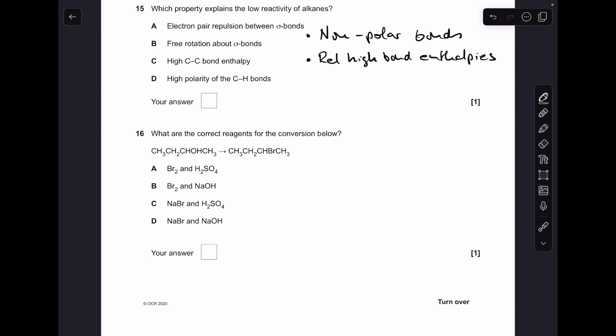Number fifteen: the low reactivity of alkanes is attributed to the non-polar bonds in the molecule and the relatively high bond enthalpies of the C-C bond and the C-H bonds. So the one that closely matches that is C: high C-C bond enthalpy. Number sixteen is testing your knowledge of organic conversions. This one's going from an alcohol to a haloalkane. To do that, you need a sodium halide and sulfuric acid, so it's going to be option C.